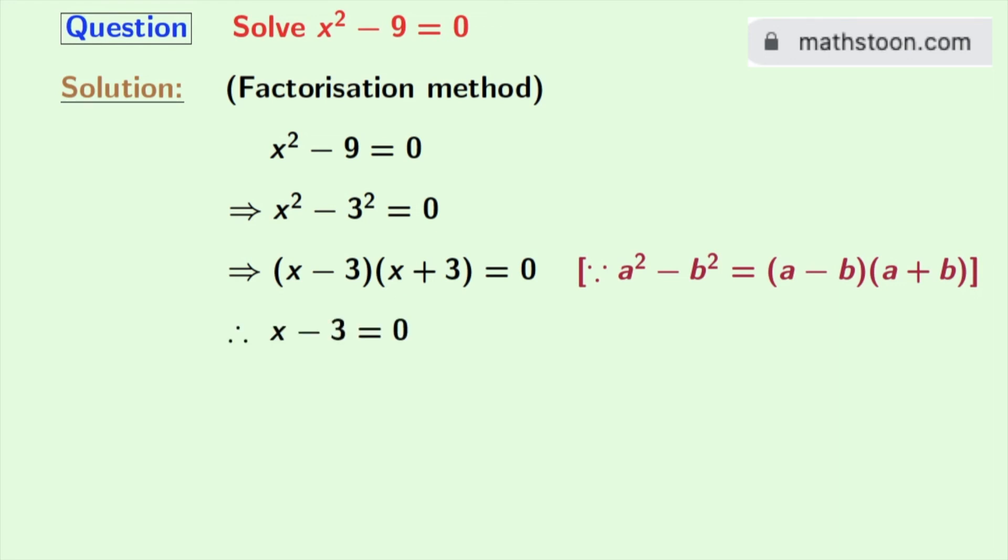So either x - 3 = 0 or x + 3 = 0. From this we get x = 3, and from this we get x = -3.